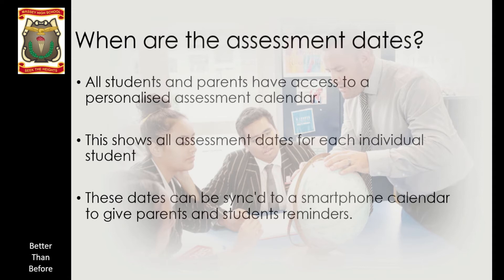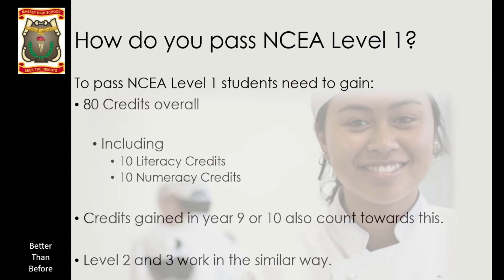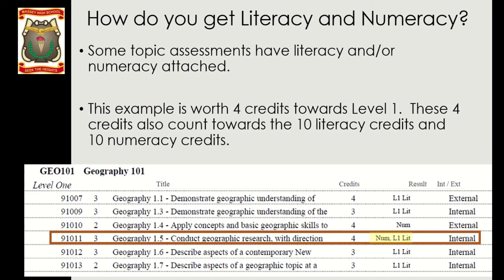Earlier we talked about the 80 credits needed overall, but to pass NCEA Level 1 you also need 10 literacy and 10 numeracy credits. These aren't separate papers — they are assigned to different units of work that students are studying anyway. It's a recognition of the skills they've completed. Going back to the geography example, you can see in the column next to internal/external, literacy and numeracy credits are indicated. If a student passes that highlighted paper, they get four credits towards the 80, plus four numeracy and four literacy credits counting towards the 10 they need.